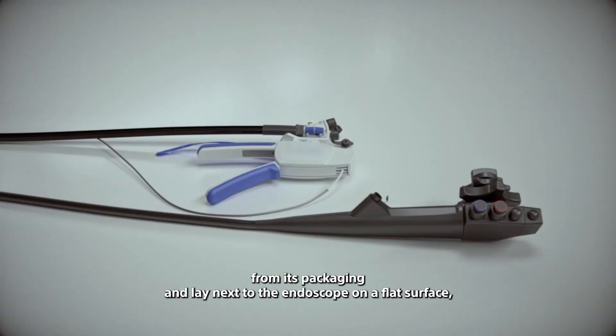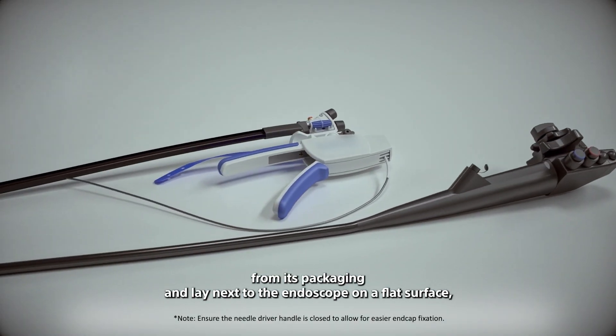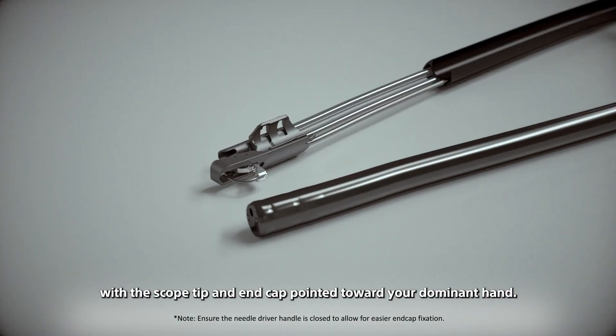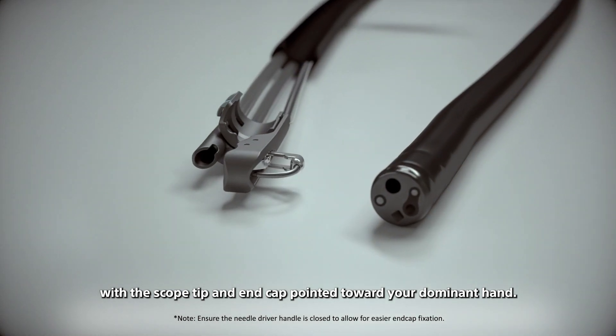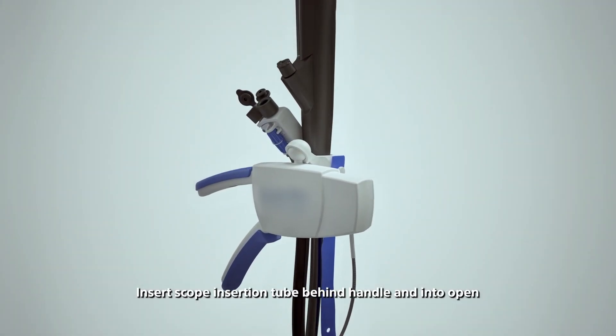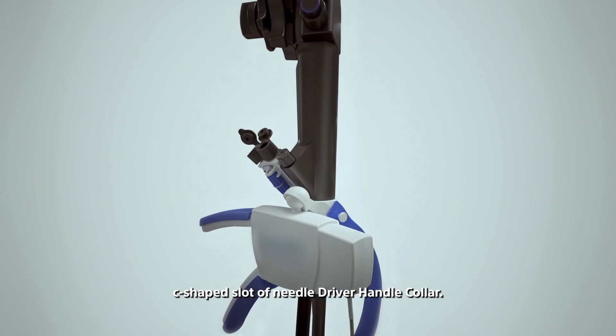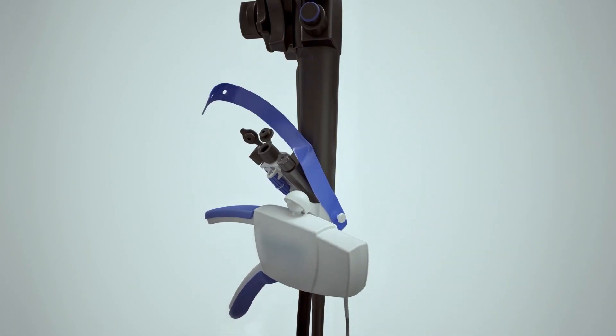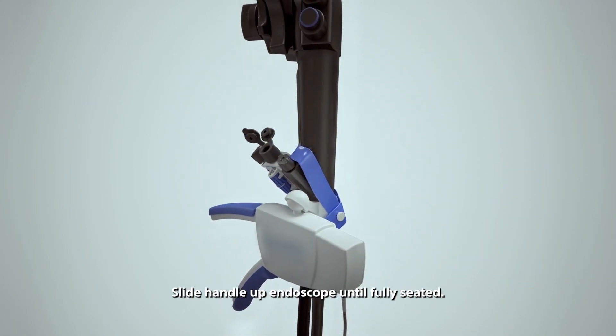Remove the needle driver handle from its packaging and lay next to the endoscope on a flat surface with the scope tip and end cap pointed toward your dominant hand. Insert scope insertion tube behind handle and into open c-shaped slot of needle driver handle collar. Slide handle up endoscope until fully seated.